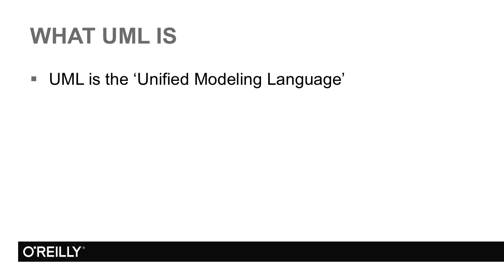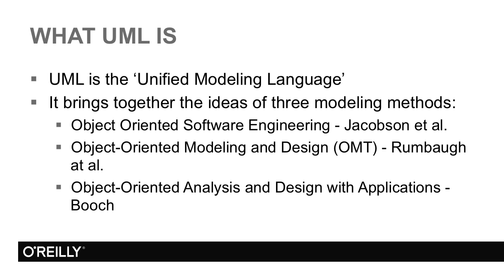At the time, there were many different object-oriented modeling notations available, all competing for users. Rational brought together three of the proponents of different notations and persuaded them to work together to come up with a notation that would unify their different approaches. The three originators were Ivar Jacobson, James Rumbaugh, and Grady Booch, each of whom had published a book proposing their notation.